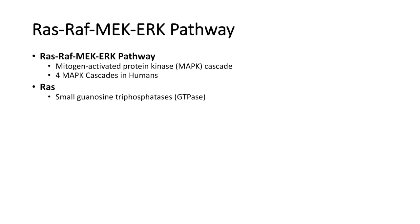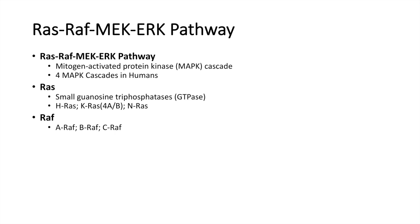Now there are actually several isoforms of RAS: HRAS, KRAS, and NRAS, and these will become more important when we talk about the types of pathologies related to this pathway. RAF also has particular isoforms: ARAF, BRAF, and CRAF, and again these will become more important when we talk about the pathologies related to the pathway.